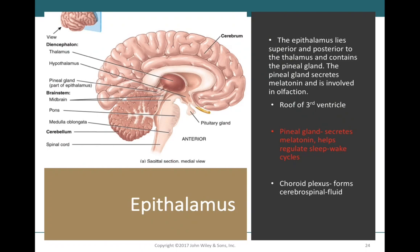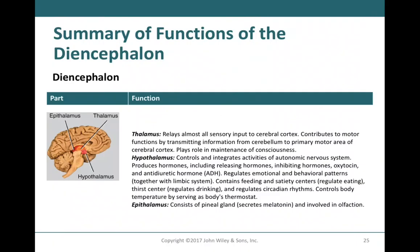The epithalamus is the last part of the diencephalon. Its key structure is the pineal gland, an endocrine organ that secretes melatonin — the major hormone regulating the sleep-wake cycle. Together, the epithalamus and hypothalamus make the diencephalon the major controller of the sleep-wake cycle.